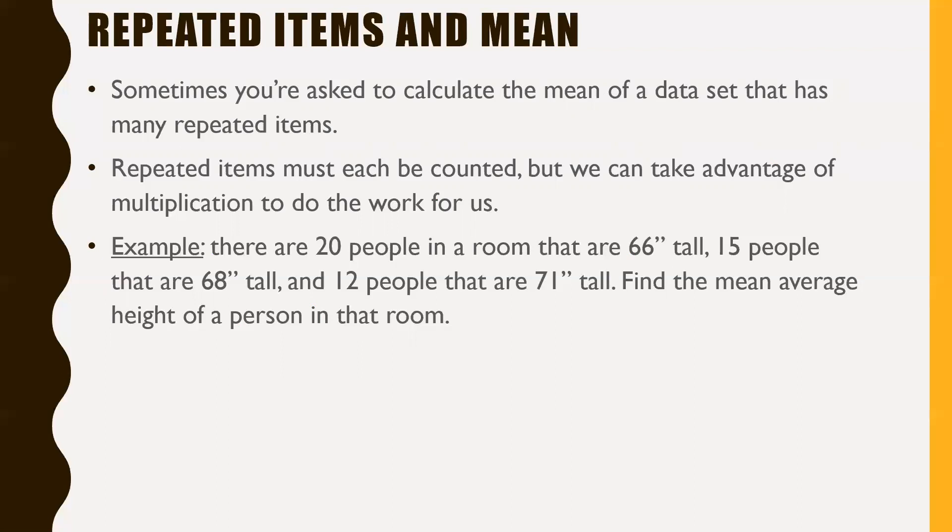Suppose there's 20 people in a room that are 66 inches tall, 15 people that are 68 inches tall, and 12 people that are 71 inches tall. Find the mean average height. Instead of adding 66 twenty times and 68 fifteen times, we use multiplication. 20 times 66 is 1,320, plus 15 times 68 is 1,020, plus 12 times 71 is 852. We add this up: 1,320 plus 1,020 plus 852 equals 3,192.